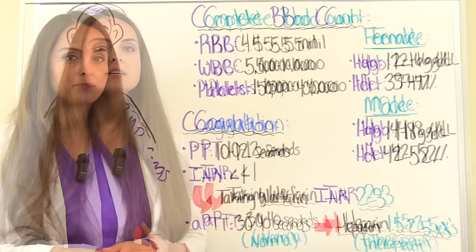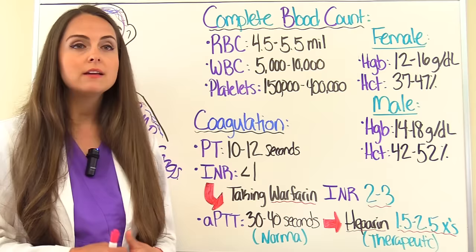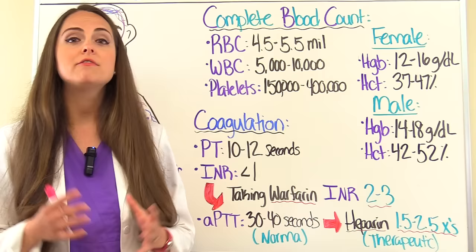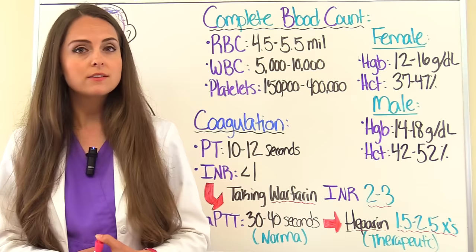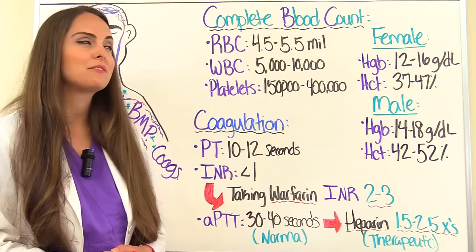So let's start talking about the complete blood count, the CBC — this tells us about the cells in our blood. A normal RBC range, red blood cell range, should be 4.5 to 5.5 million. For white blood cells, WBCs, it should be 5,000 to 10,000. For platelets, it should be 150,000 to 400,000. Some terms you want to be familiar with: thrombocytopenia is a low platelet count, so that's going to be less than 150,000.